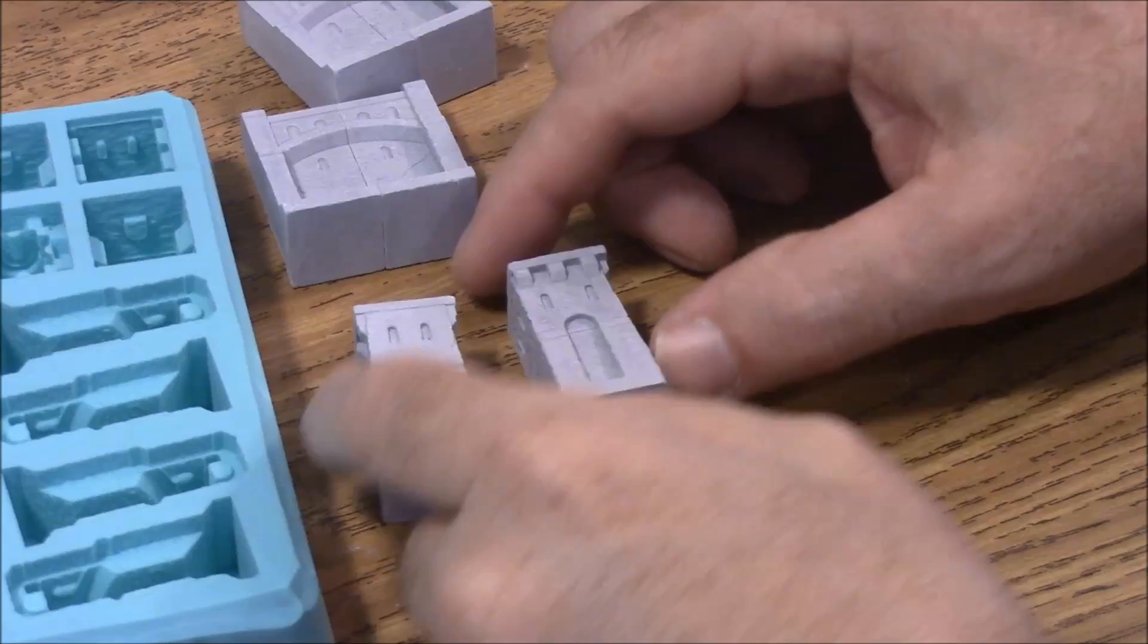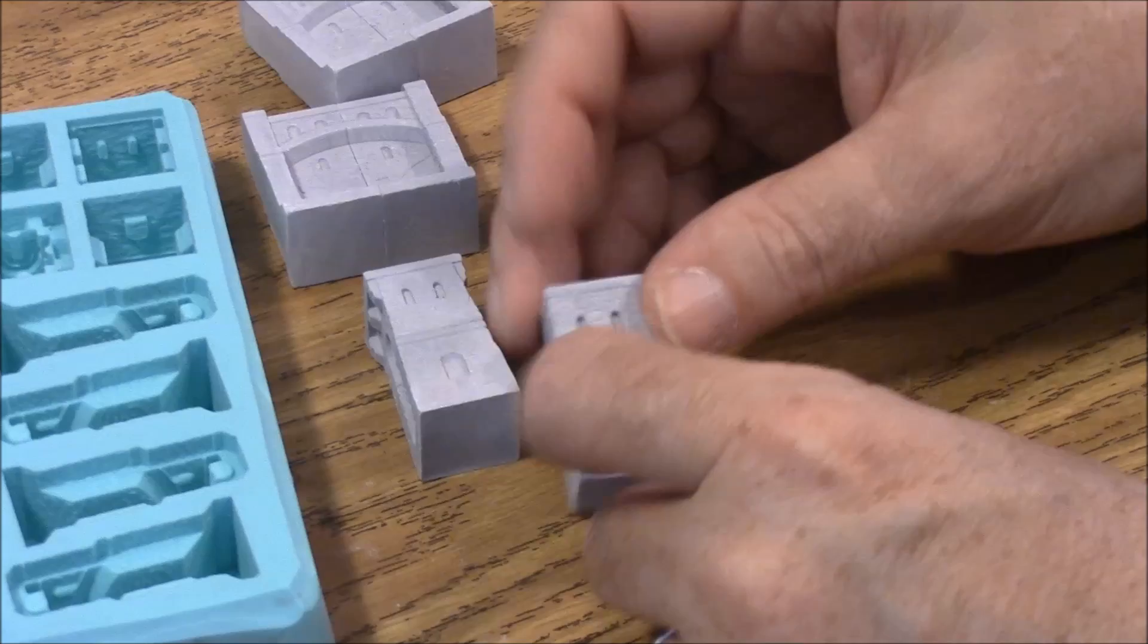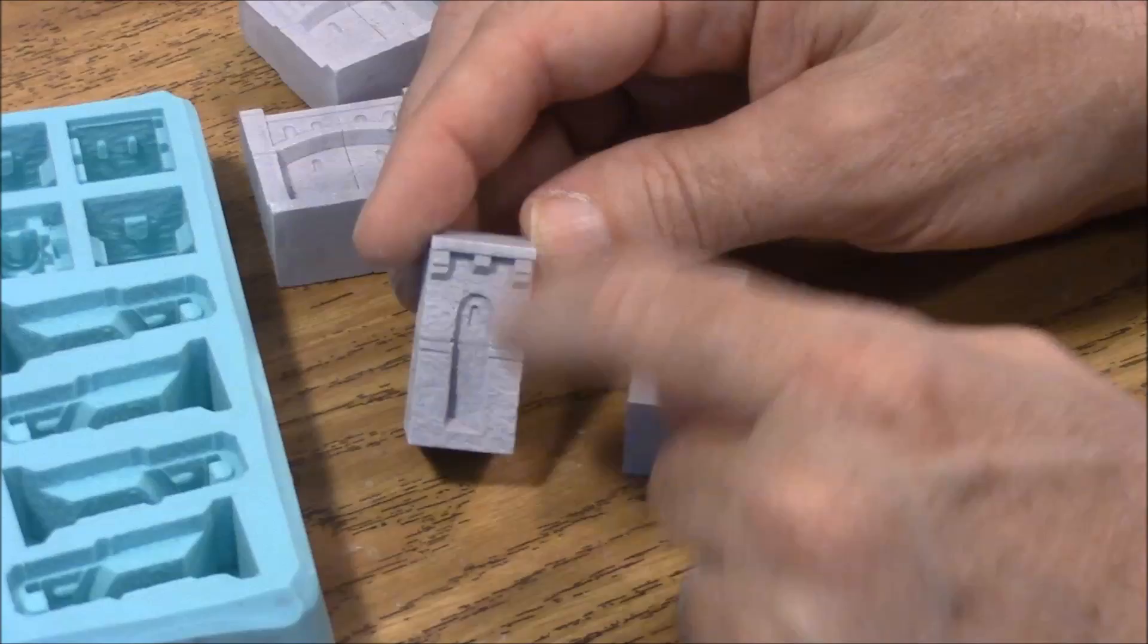Now I do want you to notice there's a difference between the straight towers and the corner towers. Corner towers, actually you can see there's two adjacent sides that have this overhang on them. And the back two adjacent sides are both completely flat to give you a good gluing surface. The straight towers are flat on one side, flat on the opposite side. And then the other two sides are an overhang.